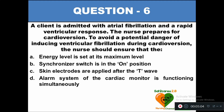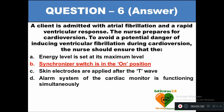Question 6: A client is admitted with atrial fibrillation and a rapid ventricular response. The nurse prepares for cardioversion. To avoid the potential danger of inducing ventricular fibrillation during cardioversion, the nurse should ensure: option A energy level is set at maximum, option B synchronizer switch is in the on position, option C skin electrodes are applied after the T wave, option D alarm system of cardiac monitor is functioning. The right answer is option B — synchronizer switch in the on position.